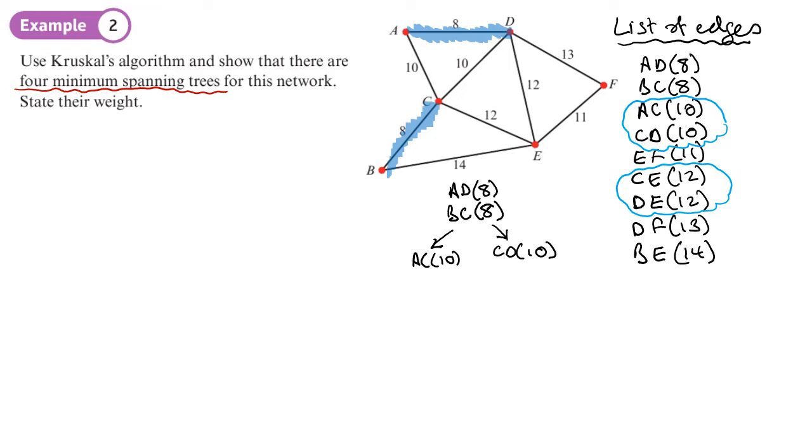If we pick AC, that's not a problem. We can get here, so that doesn't form a cycle, so we can carry on with that. After we've picked AC, let's see what we can do next. Can we pick CD?